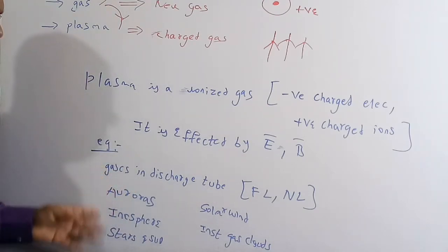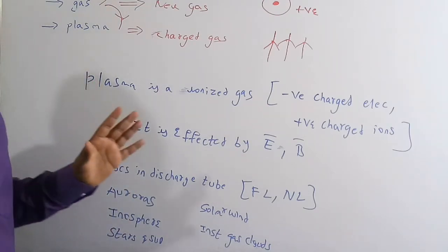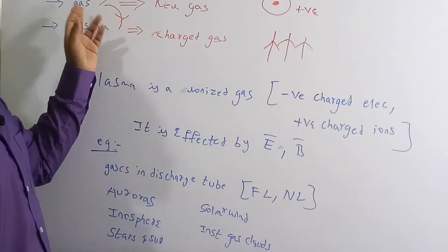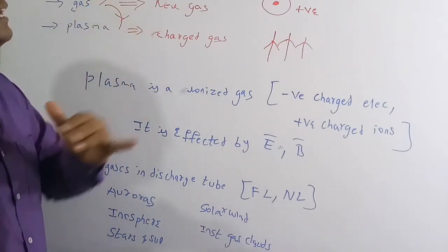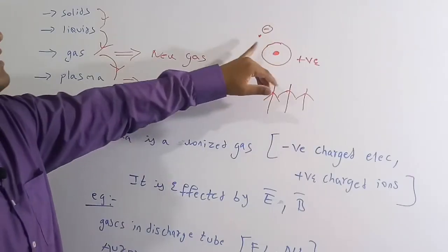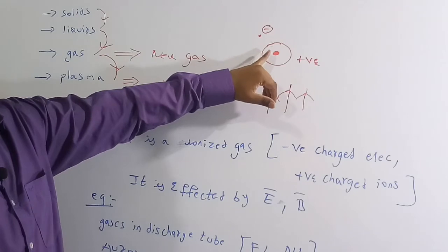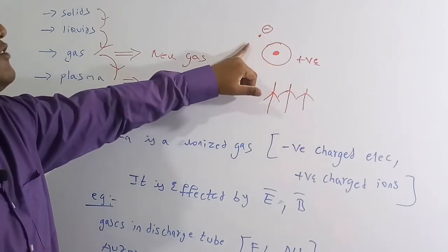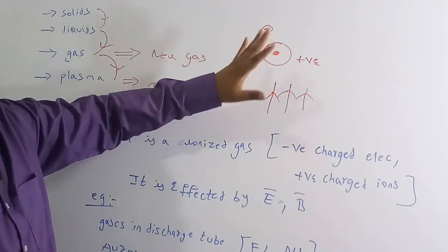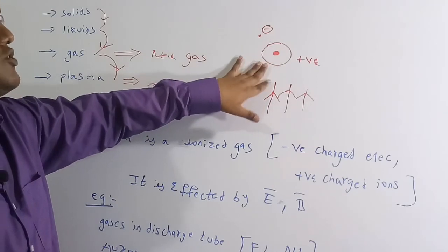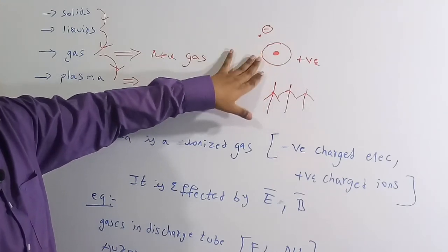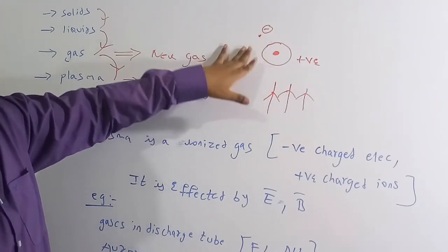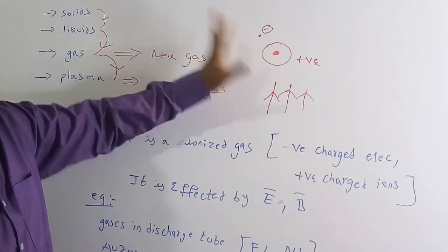Plasma is nothing but a heated form of gas. If you heat gas to a high temperature, the electrons become free, creating positive ion charges and negative free electrons. That is why plasma is called a charged gas or ionized gas.